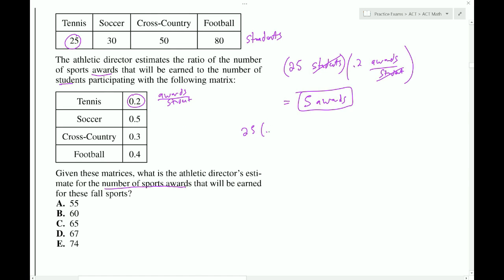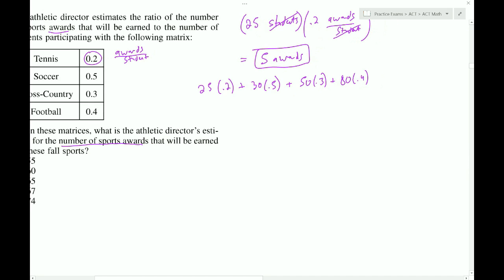So, 25 we have to multiply by 0.2. Then we have to multiply 30 with 0.5. Then we have to multiply 50 with 0.3. And finally, 80 with 0.4. This could be done in the calculator, but it's not so hard to do by hand. So, maybe we'll practice our mathematics by hand. 25 times 2 is 50. Move the decimal in once is 5. 30 times 5 is 150. Move the decimal in once. That's 15. 50 times 3 is 150. Move the decimal in once is 15. 80 times 4 is 320. Move the decimal in once is 32.